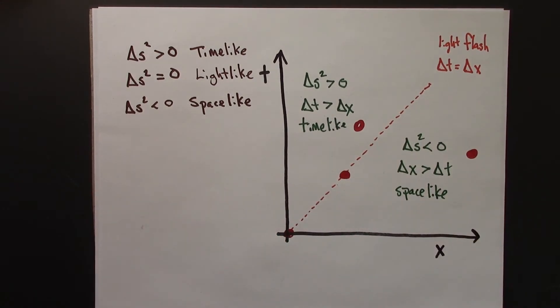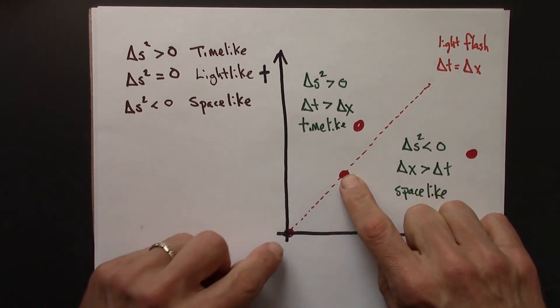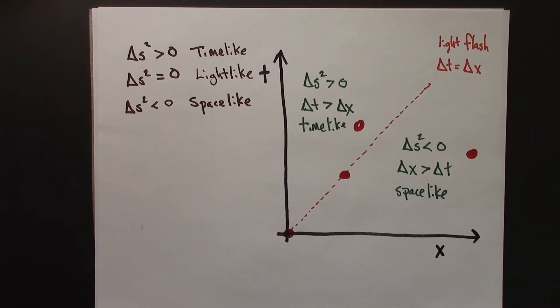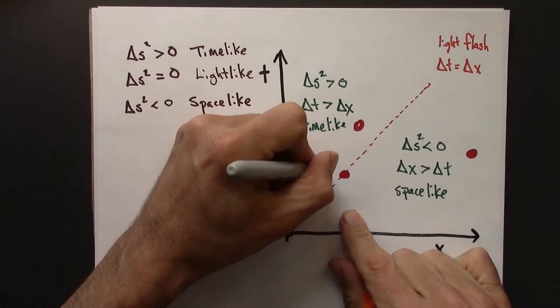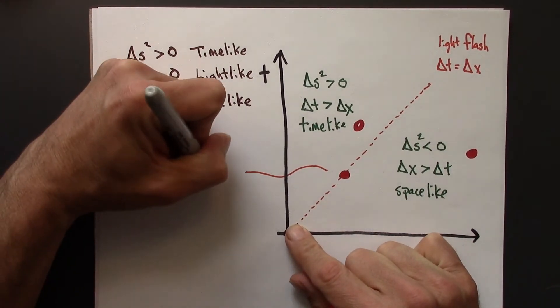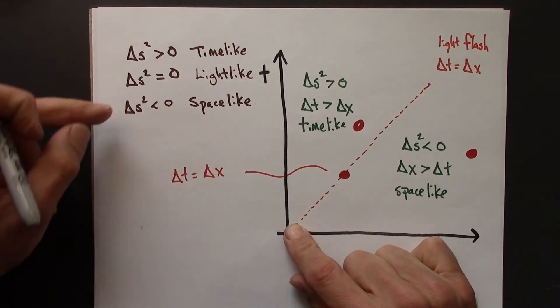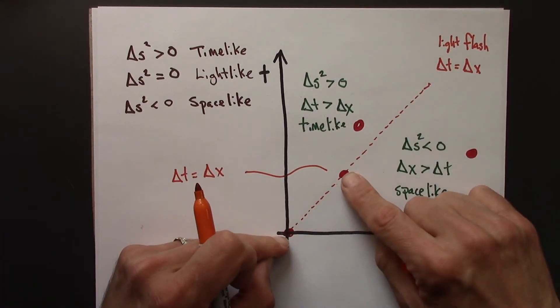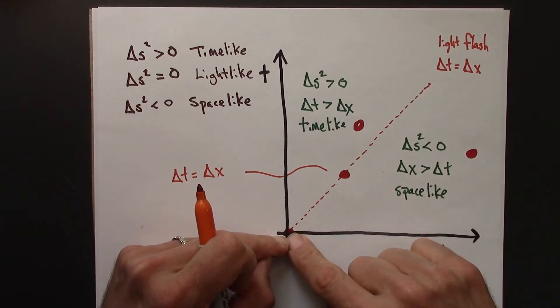Why? Well, if we're light-like, delta S squared is zero. That means that, I'll do this over here in orange, delta T equals delta X. So note that we can have a zero space-time interval, but that doesn't mean that the two events are the same, right on top of each other.